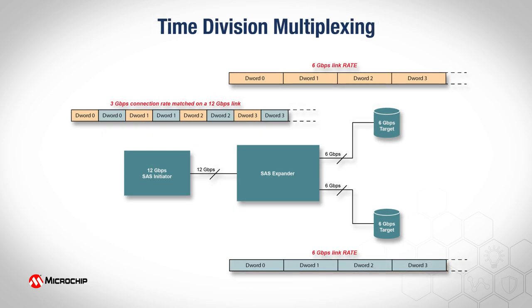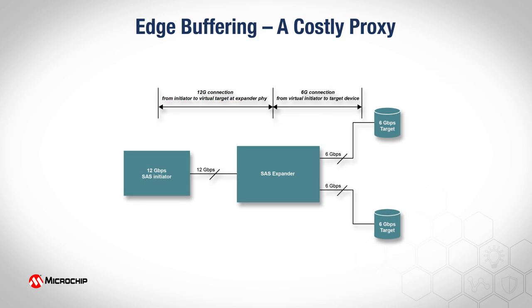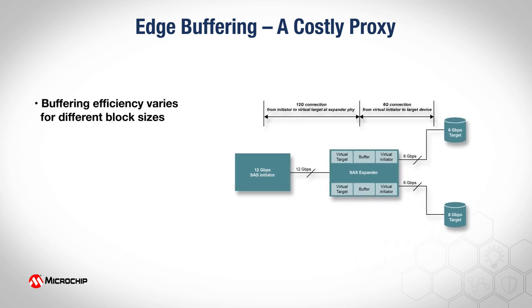SAS 2 introduced a time division multiplexing scheme that allowed an initiator to support two independent connections on the same physical pathway. SAS 2 multiplexing was unpopular because it was inflexible — it really only provided benefit when all targets in the system operated at half the initiator link rate. SAS edge buffering is a link speed aggregation solution that uses a virtual target-initiator pair with a RAM buffer implemented at each target-attached expander PHY. The expander then acts as a proxy for the initiator-target relationship by using a store-and-forward mechanism.